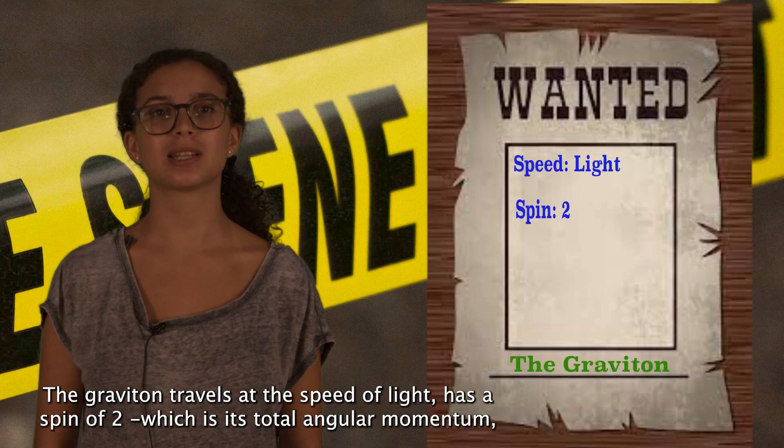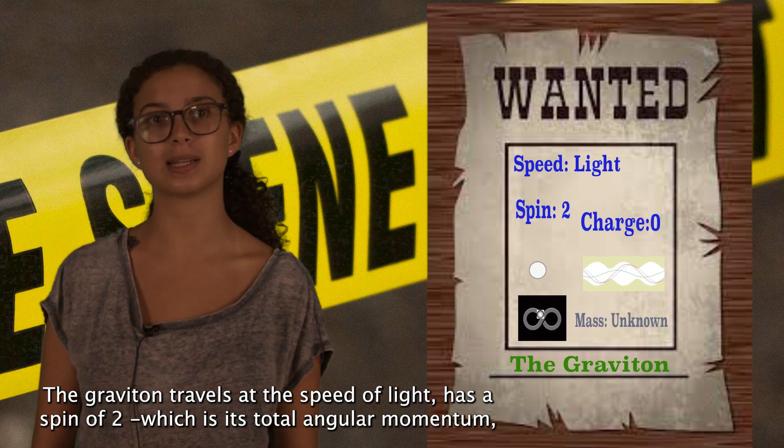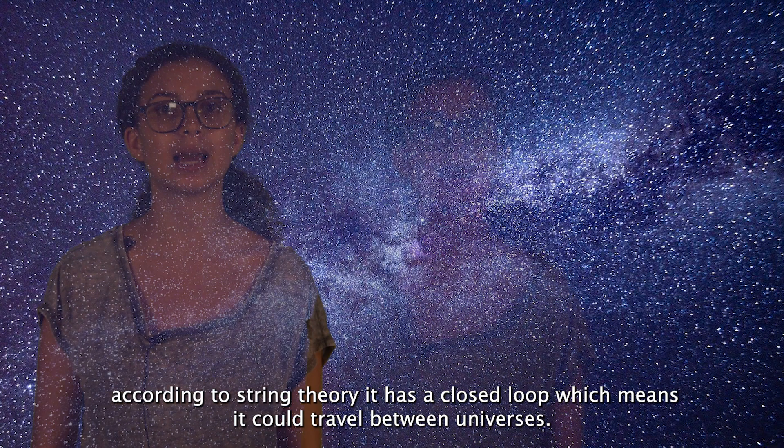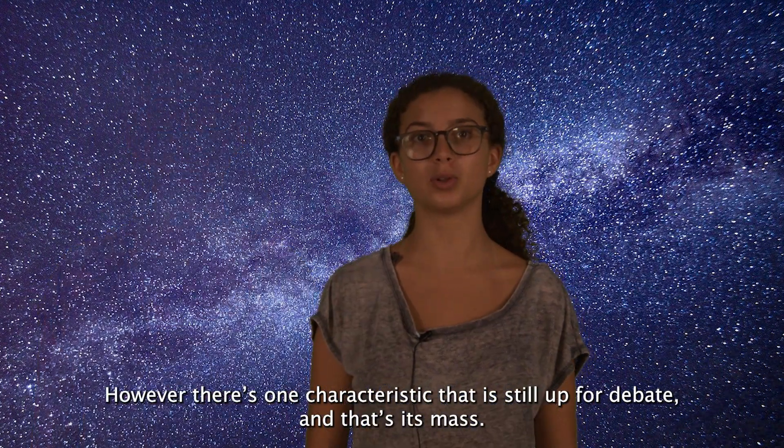The graviton travels at the speed of light. It has a spin of two, which is total angular momentum, infinite range, and behaves both as a wave and a particle. According to string theory, it has a closed loop, which means it could travel between universes.